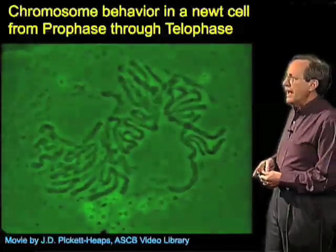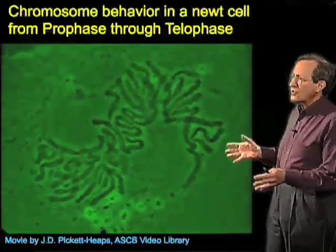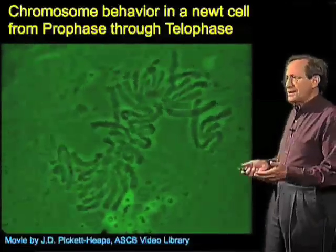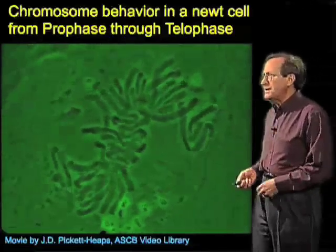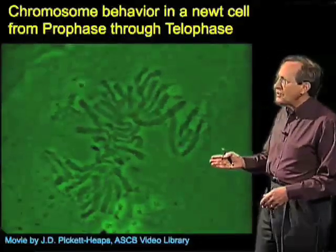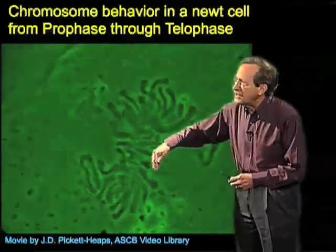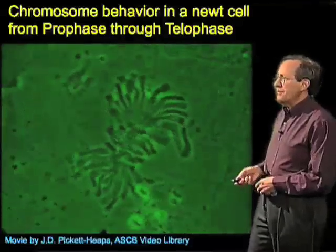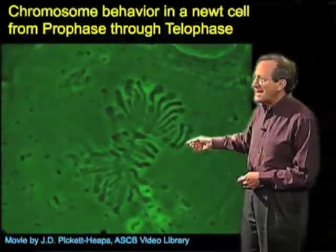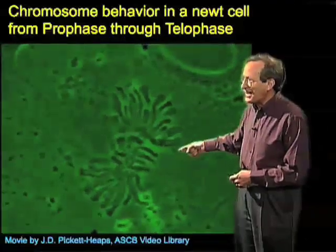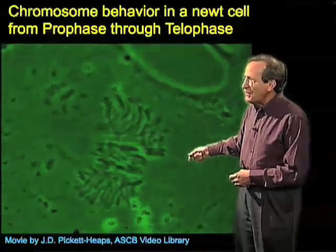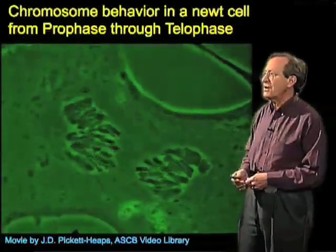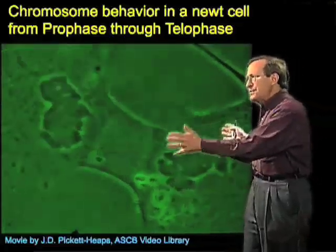Chromosomes appear to be moving and becoming organized — this is of course the process of moving towards metaphase. It's the stage called prometaphase, and the process of moving chromosomes to the metaphase plate is called congression. They're gradually getting lined up, but it's clear that there are also renegades that don't get in line in time, and some of them will even depart and then go back.